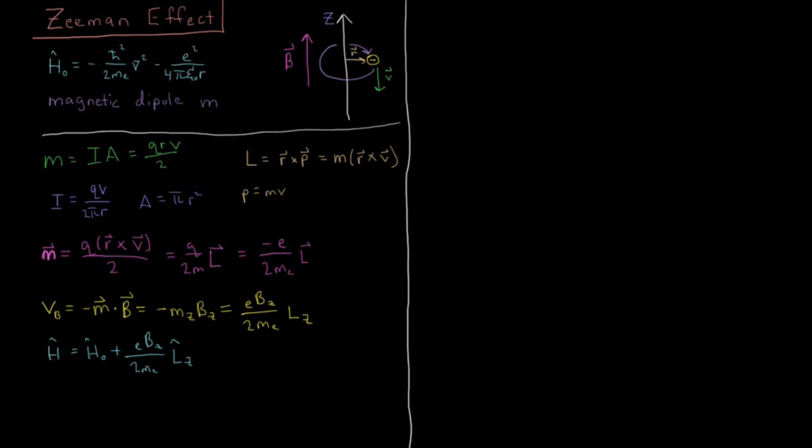Which is, if we remind ourselves, Lz is just -iℏ d/dφ. So that's all fine and good, so we would get a new Schrödinger equation here, which would be H₀ψ plus eBz over 2me Lz acting on ψ equals Eψ.